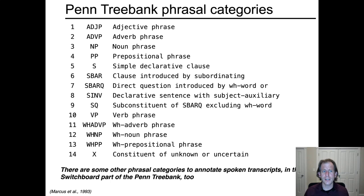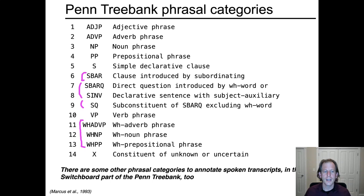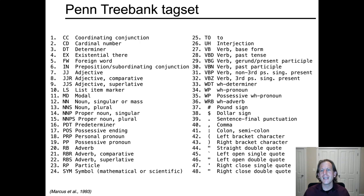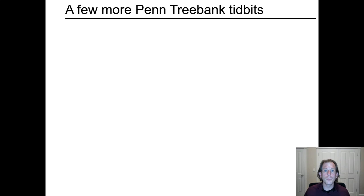The phrasal category inventory is fairly straightforward — adjective phrases, adverb phrases, noun phrases, prepositional phrases, sentences, verb phrases. S-bar covers both complement clauses and relative clauses, and there are various top-level annotations for inversions and questions, plus a rich inventory of WH question types. The tag set is closely related to the old Brown Corpus tag set and is medium fine-grained: singular and plural nouns are distinguished, proper versus common nouns are distinguished, and all verb inflections are distinguished. But finer-grained distinctions are not always made.